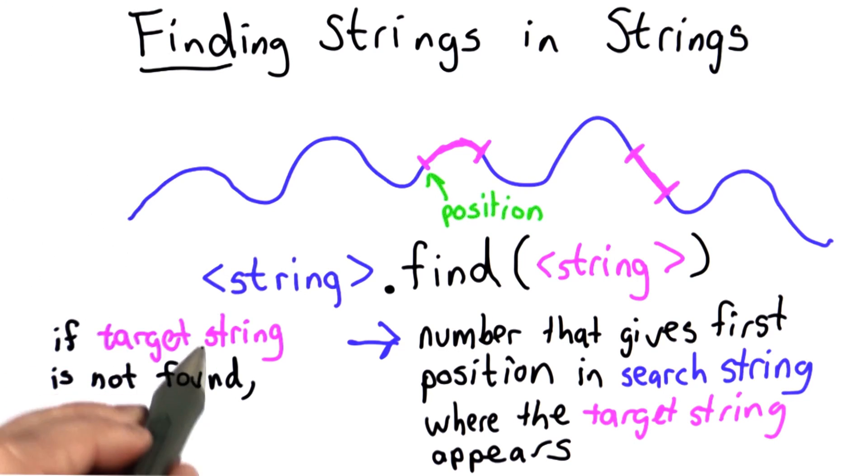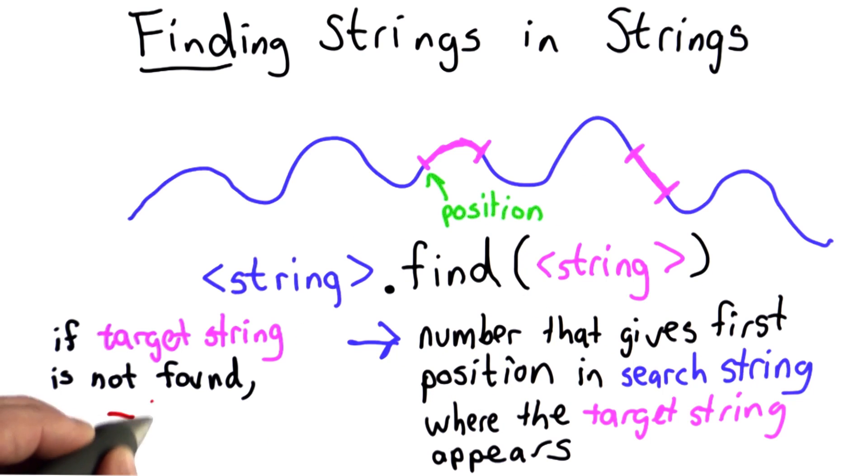If the target string is not found anywhere in the search string, then the output will be negative one. So let's try a few examples to understand how that works, and we'll do this in the Python interpreter.